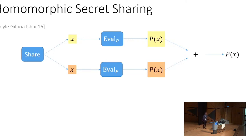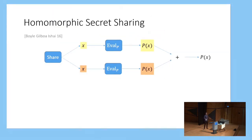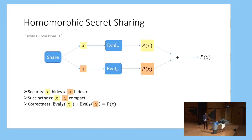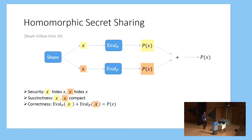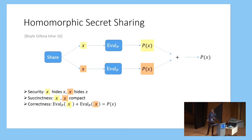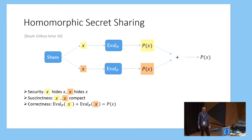Just as in regular secret sharing, in the two-party setting which I'm going to focus on here, we have a share algorithm which outputs two shares of a secret value X, and the security property requires that individually each of these shares completely hides the secret. On top of this, we require a homomorphic evaluation procedure which takes as input an additional public program P and then homomorphically evaluates this program on the shares locally. We require that for correctness after evaluation, we end up with a secret sharing of the result of P applied to the input X.